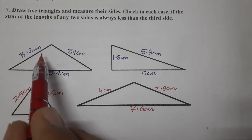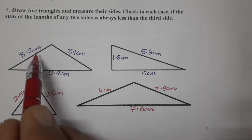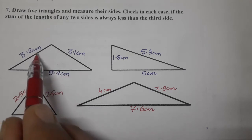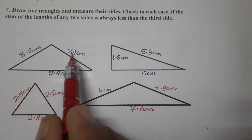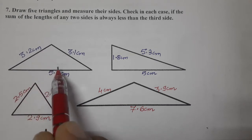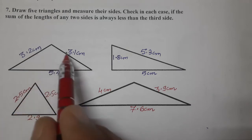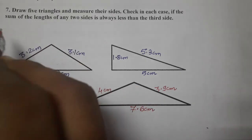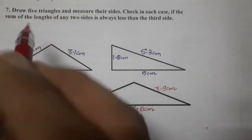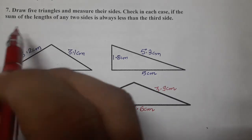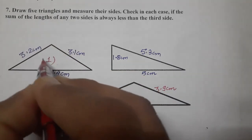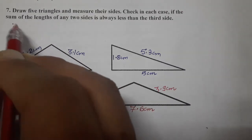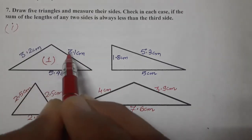There are three possible combinations when taking two sides at a time from the three sides of a triangle. We will take two sides at a time. If we take any two sides, their sum should be greater than the third side. There are three cases for each triangle. Let's do the first case for the first triangle: 3.2 plus 3.1.